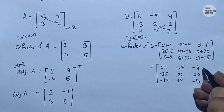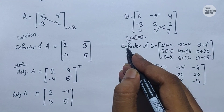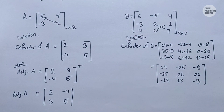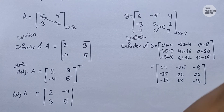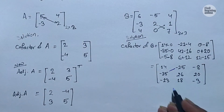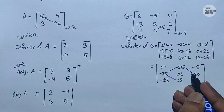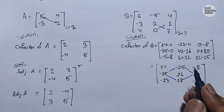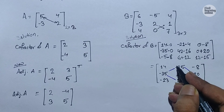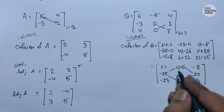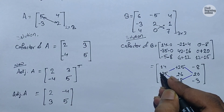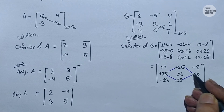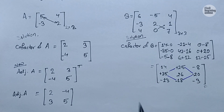For the cofactor of a 3x3 matrix, we need to change the signs of the elements occupying the 'diamond' positions — that is, the off-diagonal cross positions making a diamond shape. These elements' signs are changed: positive becomes negative and negative becomes positive. So -25 becomes +25, -35 becomes +35, +18 becomes -18, and +20 becomes -20. This gives us the cofactor of matrix B.